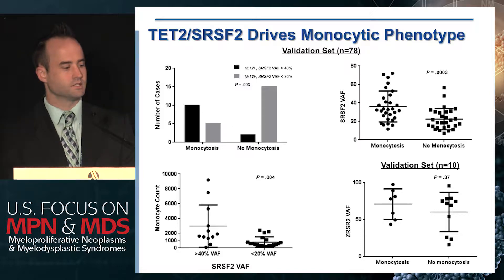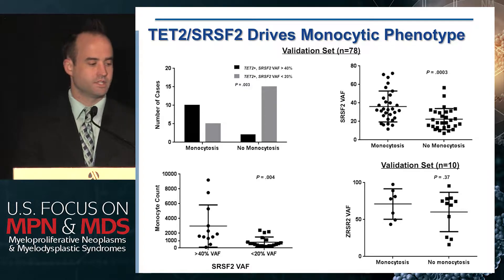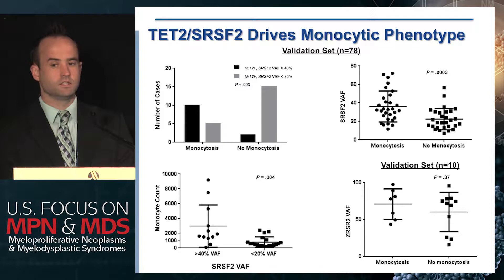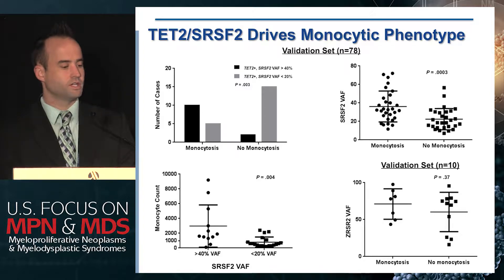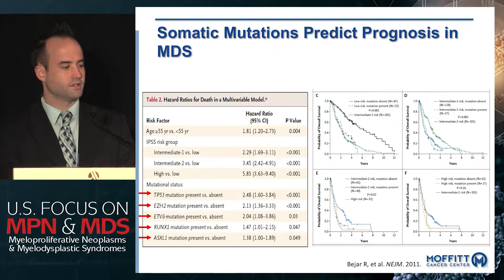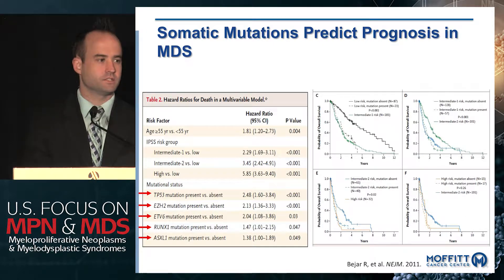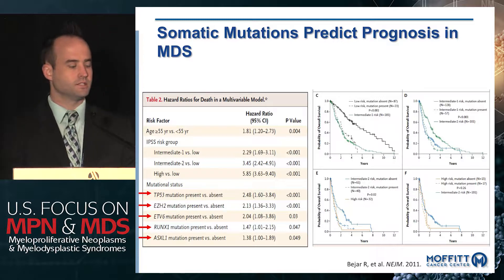The absolute monocyte count is also predicted by the VAF of SRSF2. We looked at ZRSR2, a relatively rare co-mutation combination, and although there is a trend for higher VAF in patients with monocytosis, it was not statistically significant, likely due to small numbers. Overall, splicing factor mutations can clearly predict the phenotype of these patients.